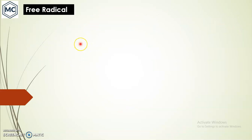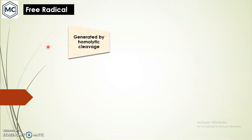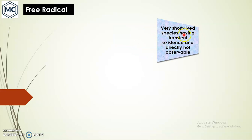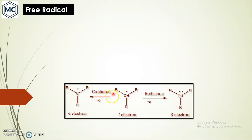What is a free radical? It is a carbon atom bearing one or more unpaired electrons. Because of this unpaired electron it shows paramagnetic behavior. It is generated by homolytic cleavage and is short of one electron to complete its octet, so it is electron deficient. Unlike carbocation which is positively charged, and carbanion which is negatively charged, free radical is uncharged. Like all other intermediates, it is very short-lived, having transient existence, is directly not observable, highly unstable, and very reactive.